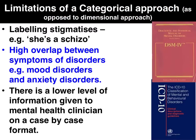Limitations of the categorical approach: we are more likely to have labelling, as opposed to a dimensional approach, which can stigmatise the patient — they might be labelled as having a psychotic disorder, causing others to treat them differently. There is a high degree of overlap between symptoms of different disorders, whether mood, anxiety, psychotic, or developmental. And there is a lower level of individualised information provided on a case-by-case basis compared to a dimensional approach.